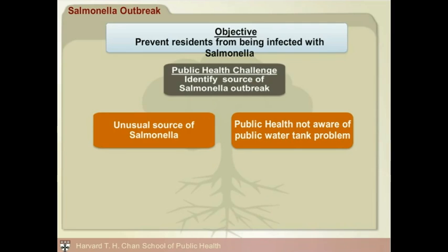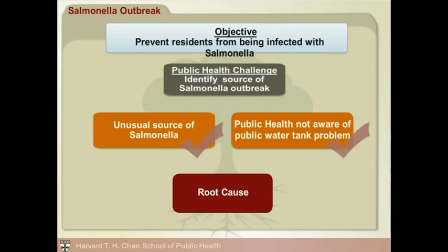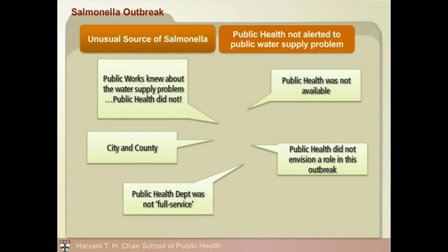We have now identified two intermediate causes: an unusual source of salmonella — the public water supply — and public health not being aware of problems with the public water tanks. We now turn our attention to looking at the root causes of these two intermediate causes. As we continue breaking down our analysis, we break intermediate causes down into more granular detail. A number of root causes were suggested by incident respondents, and we examine each to decide if it is a true root cause.